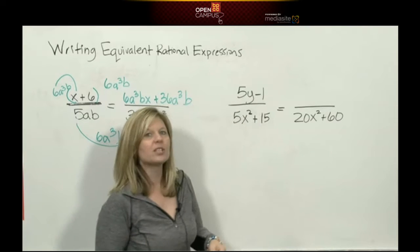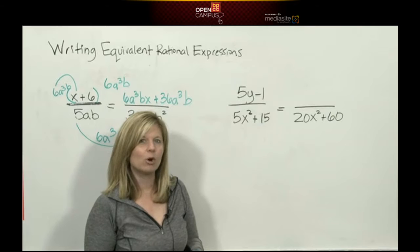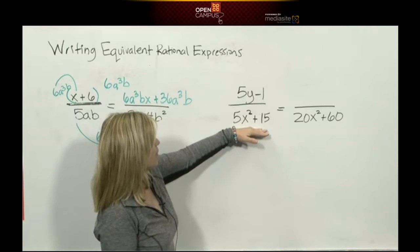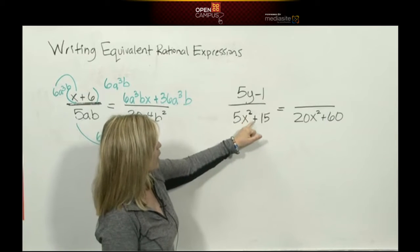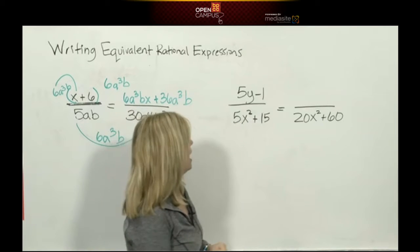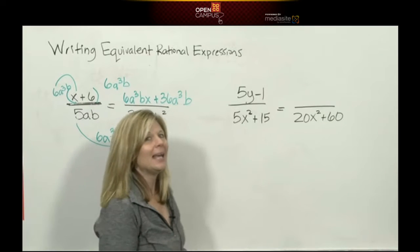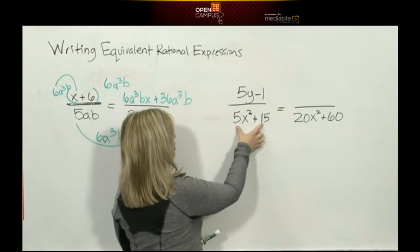Now this was easy because our denominators were monomials - they were already connected by multiplication. But what happens if your denominators are binomials or trinomials? For example, this denominator is 5x²+15, and this denominator is 20x²+60.